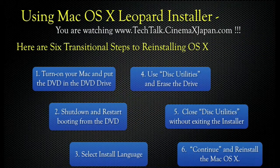There are six transitional steps to reinstalling OSX. Number one: turn on your Mac and put the DVD in the DVD drive. Number two: shut it down and restart booting from the DVD. Number three: select the install language. Number four: use Disk Utilities to erase the drive. Number five: close Disk Utilities without exiting the installer. And number six: continue and reinstall OSX.